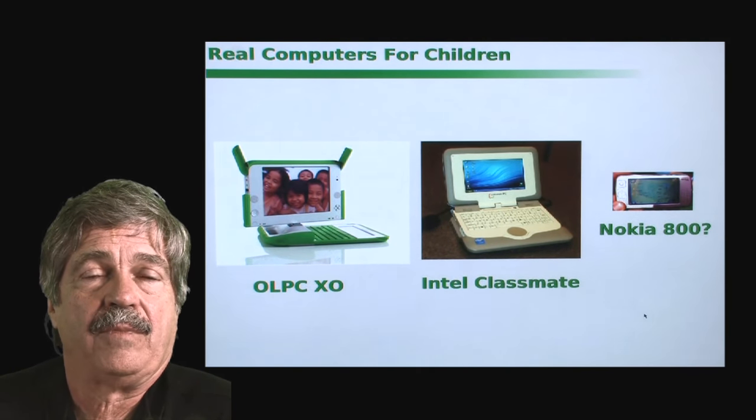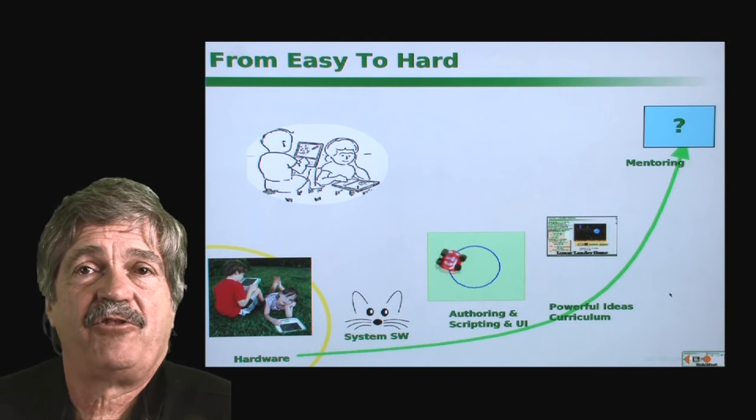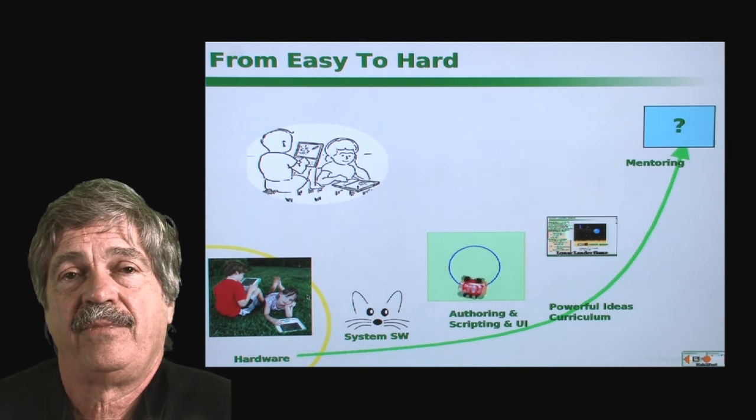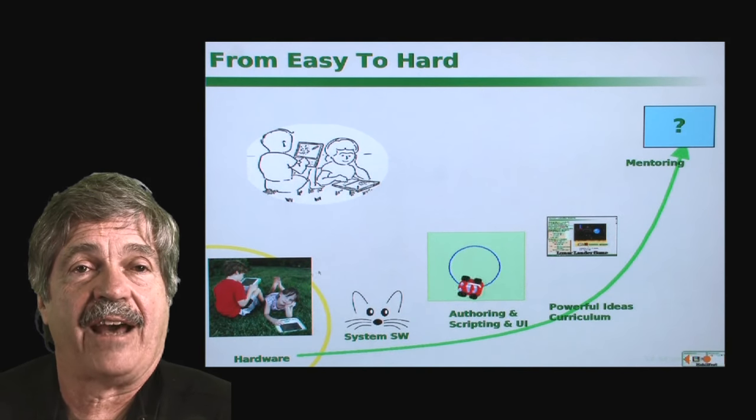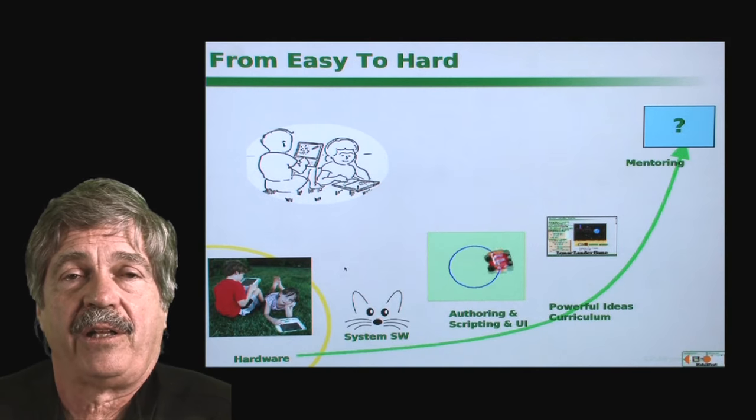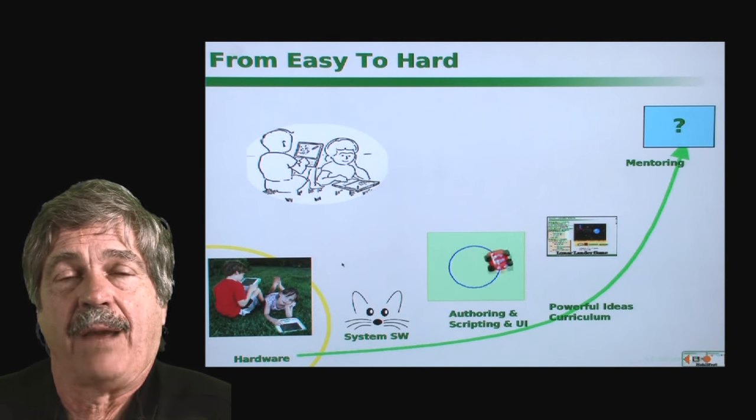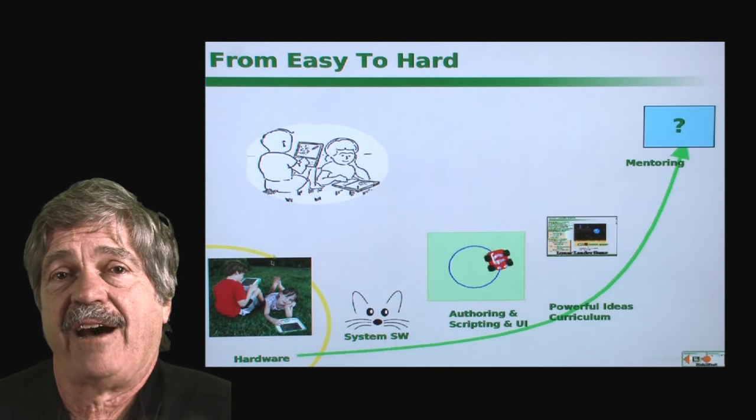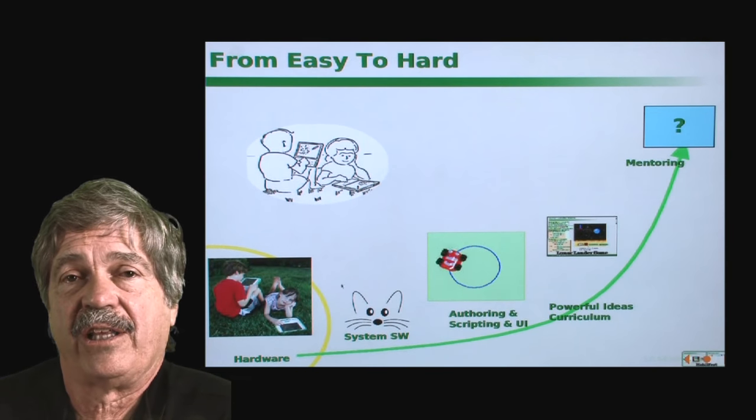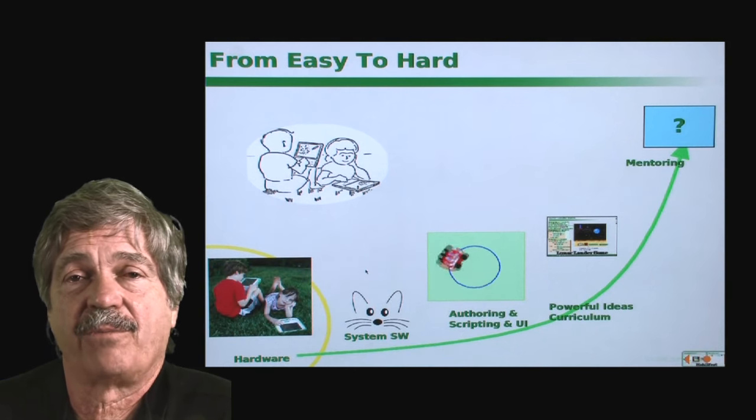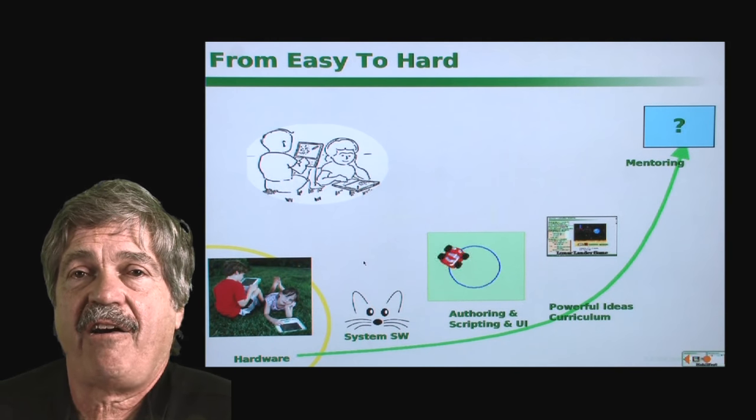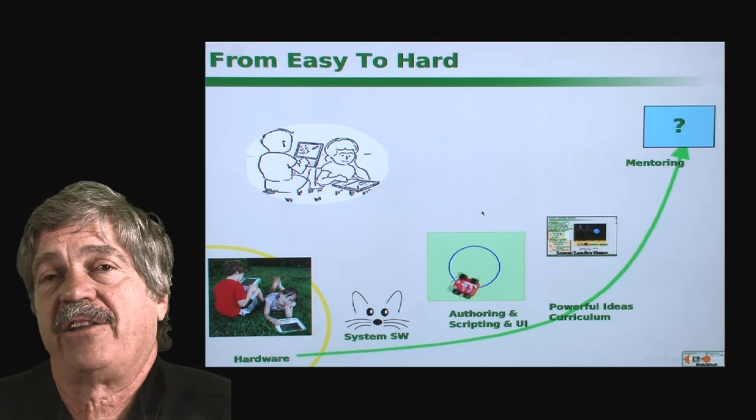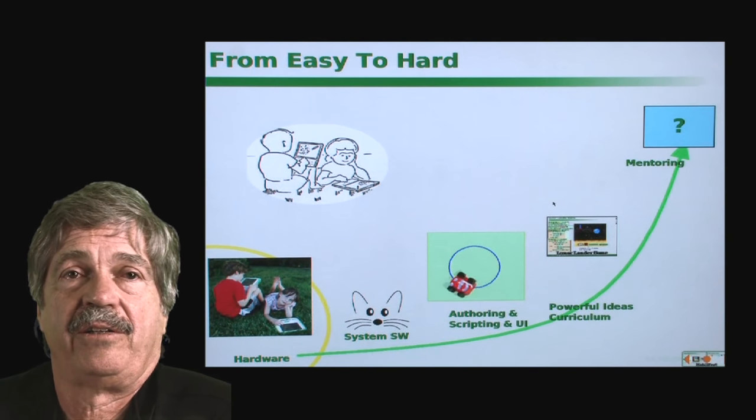When we look at this idea of children's computers and look at what's easy and what's hard, the easiest thing is actually to make the computer itself. Even though it was kind of a monumental task over the last few years, it was still done by a few dozen people and perhaps a hundred people at Quanta, the company that's making it. So it's not that difficult to do technology today and the system software and so forth is also a fair amount of work but it's definitely doable. Where things start to get harder here is in thinking about the environments for the children and really harder to start thinking about how we can teach children non-trivial ideas.